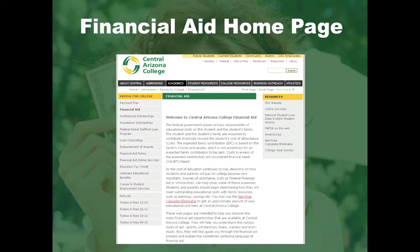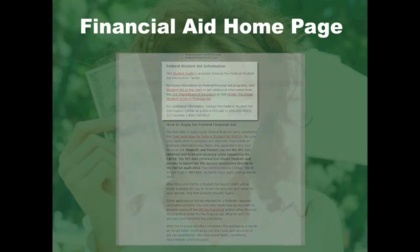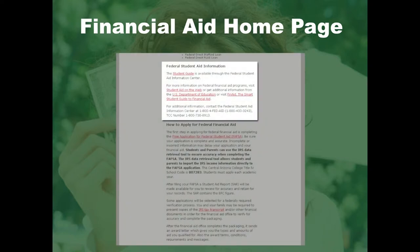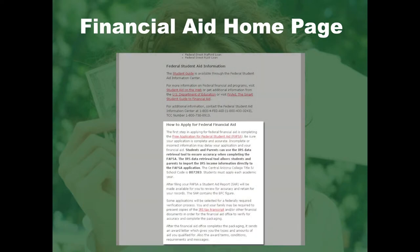Below is our homepage where the road to financial aid begins. On the homepage, the following information is available as you scroll down: federal programs we offer, links to federal student aid information including the Free Application for Federal Student Aid or FAFSA, how to apply for federal aid, and some basic eligibility requirements highlighting satisfactory academic progress.